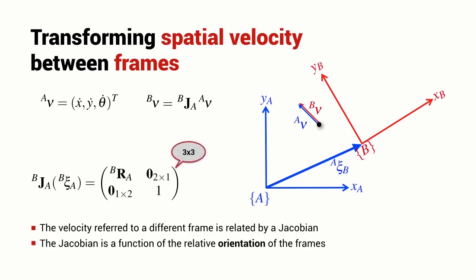This particular Jacobian is a function of the relative pose between the two frames. It's a 3 by 3 matrix that comprises the rotational part of the relative pose and a bunch of zeros and ones. In fact, it is only a function of the relative orientation between the frames. It doesn't depend at all on the distance between the origins of these two frames.